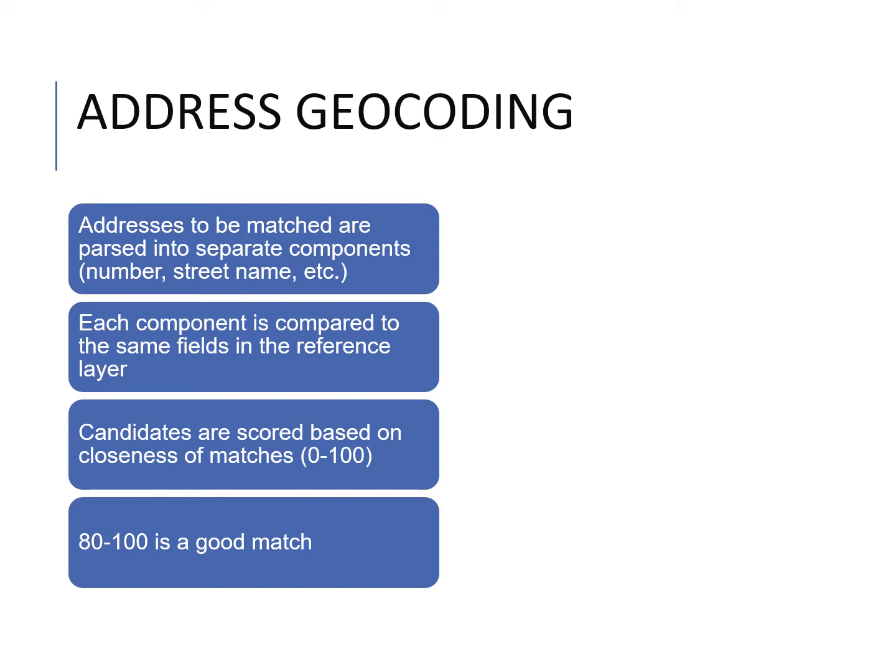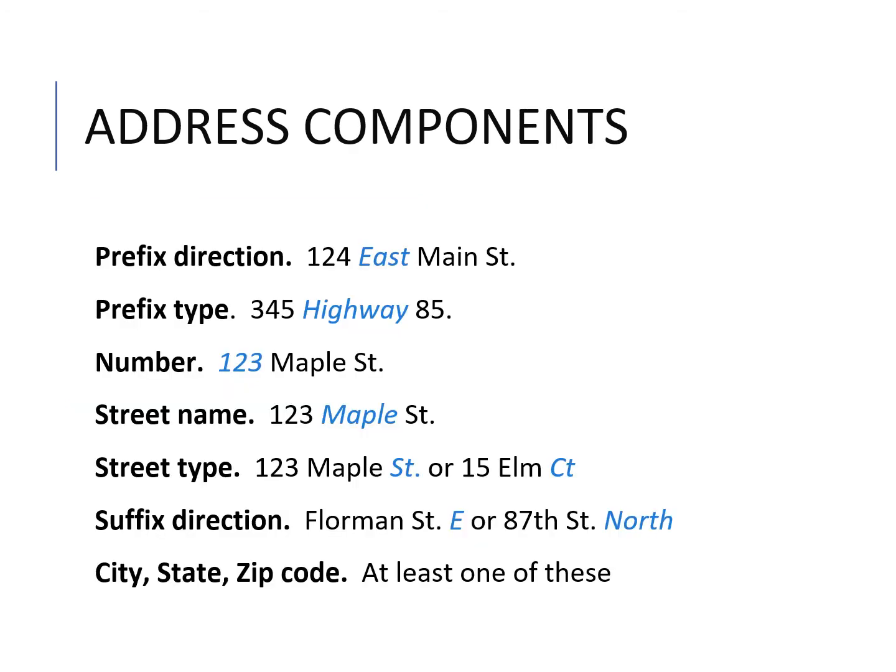Each component is then compared to the same fields in the reference layer to find matches. Candidates are scored based on the closeness of the match — a score of 80 to 100 is a very good match, meaning most of the attribute features in the spatial component are matching the address table. Address components include the prefix direction, prefix type, street name, street type, suffix direction, and city, state, or zip code.